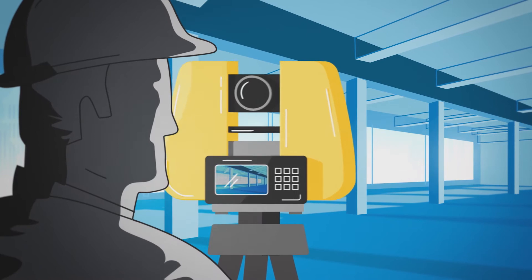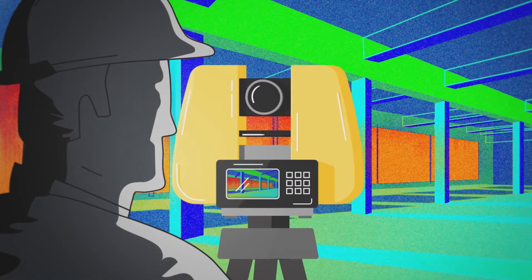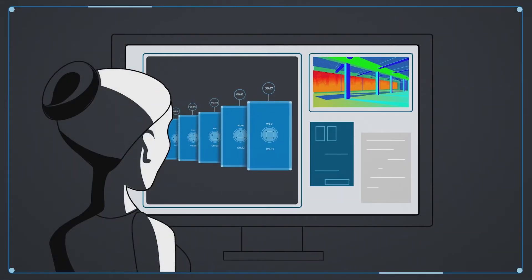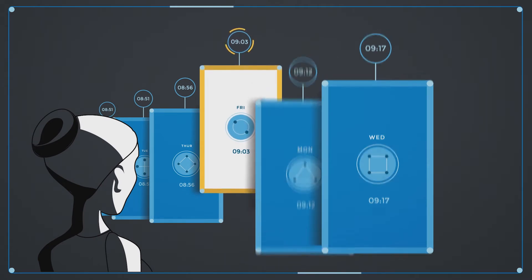Laser scanners are invaluable in these situations because they allow contractors to record progress and compare data to the original model. If a discrepancy arises, the contractor can simply reference historical scans and identify the issue.